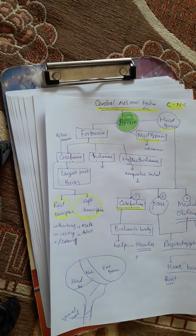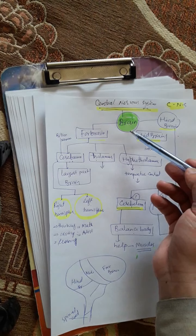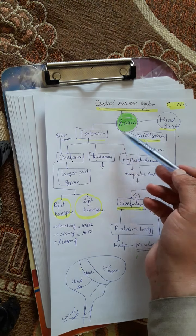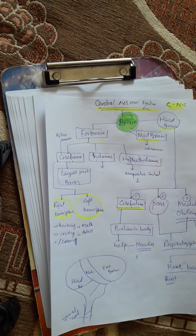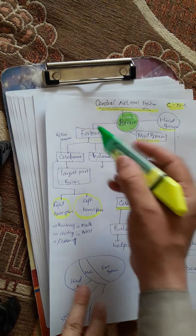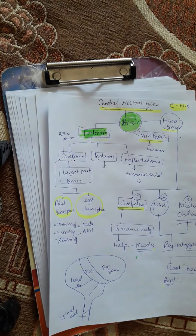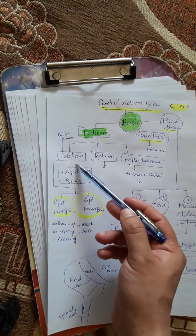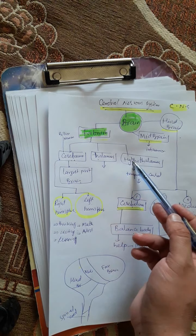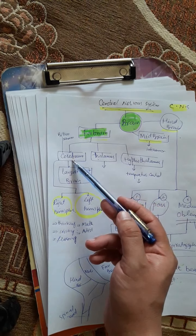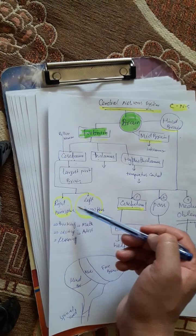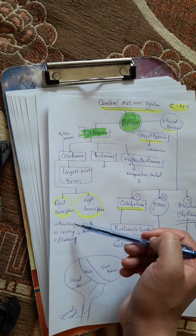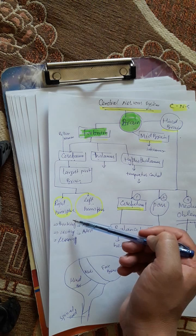So today's topic was the brain. The brain has three parts: forebrain, midbrain, and hindbrain. The forebrain also has three parts: cerebrum, thalamus, and hypothalamus. Cerebrum is the largest part of the brain, which is further divided into the right hemisphere and the left hemisphere, which perform different functions.